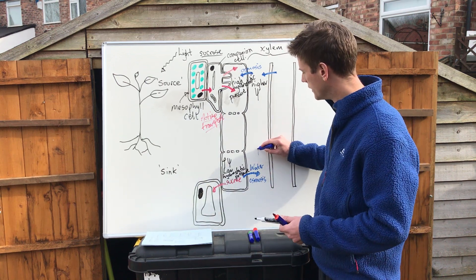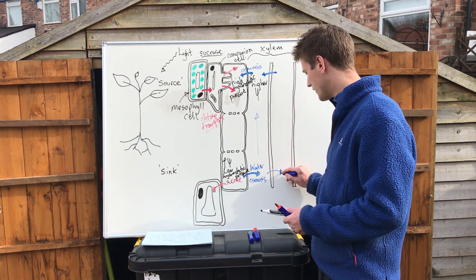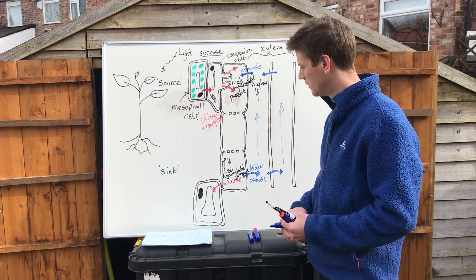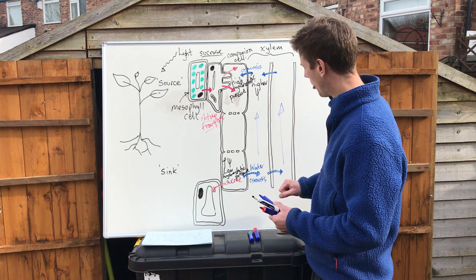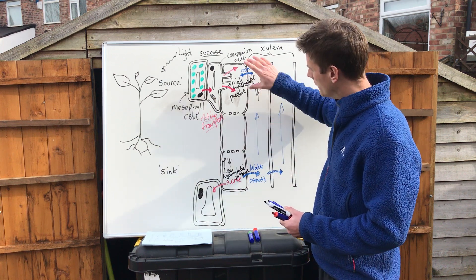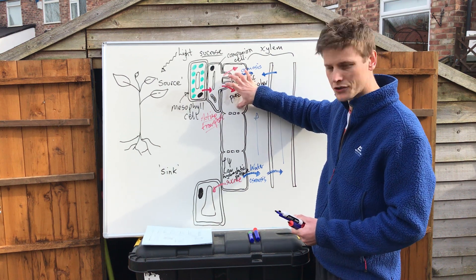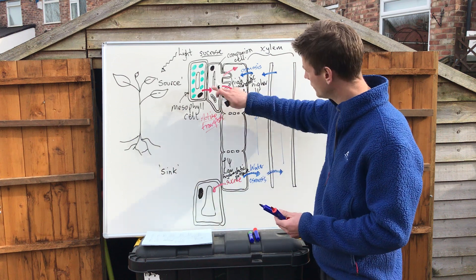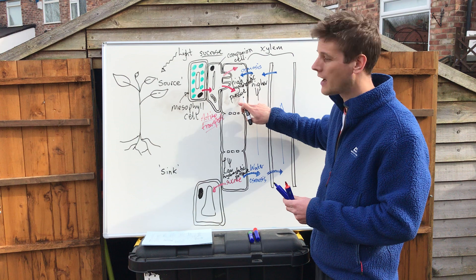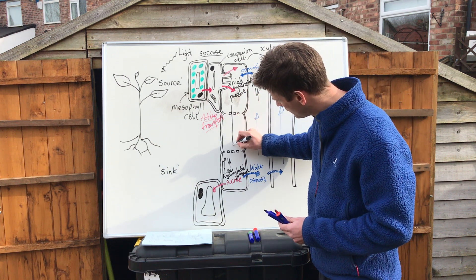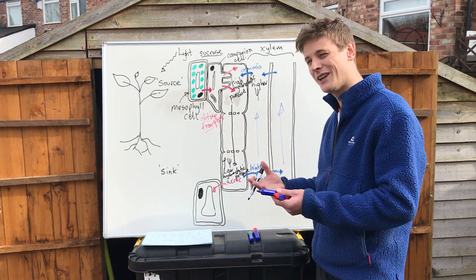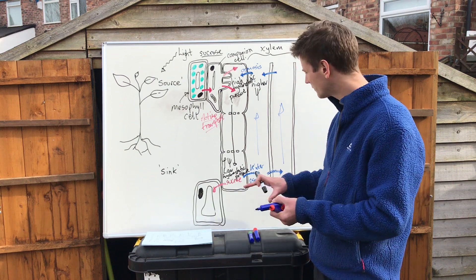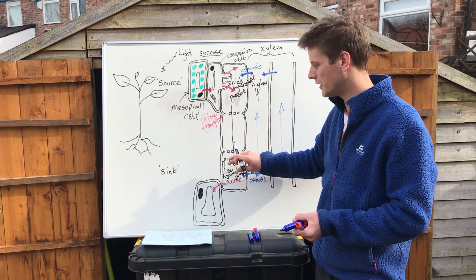The water returns to the xylem and continues its pathway up through the xylem via transpiration and the cohesion-tension theory. Returning to the phloem: we have high pressure at the source and low pressure at the sink, so the sucrose — the products of photosynthesis — travels down its hydrostatic pressure gradient from the source to the sink through the phloem. This movement is called mass flow, and the movement of sucrose itself is referred to as translocation.